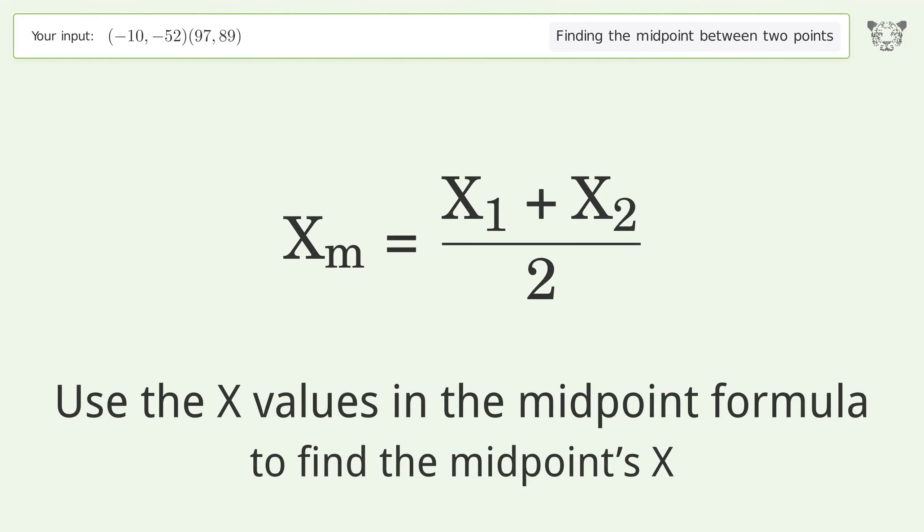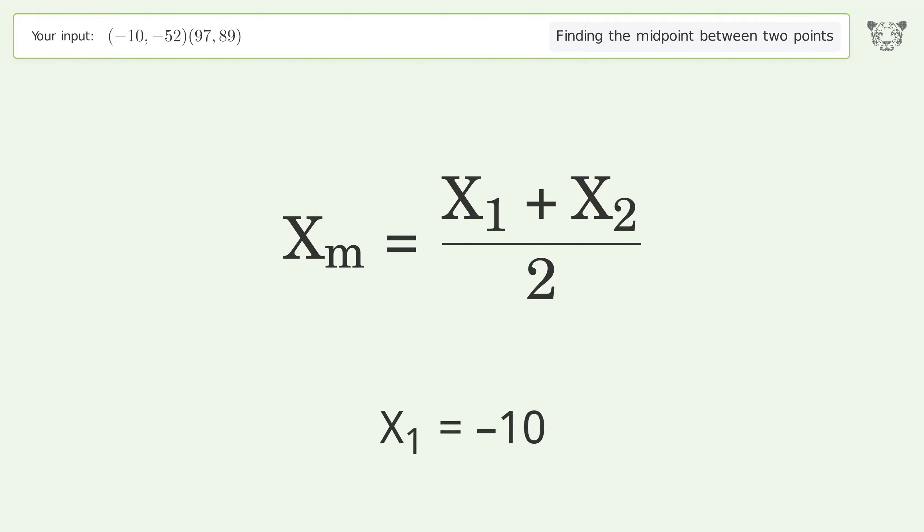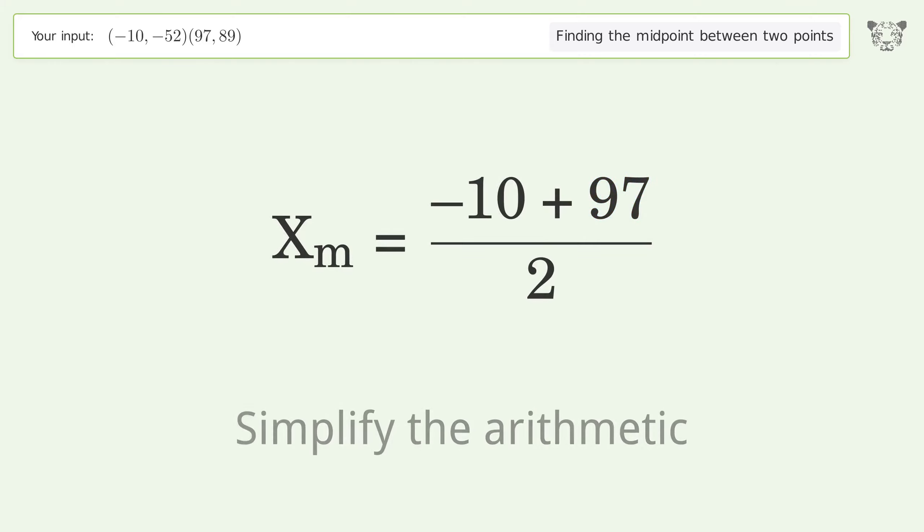Use the x values in the midpoint formula to find the midpoint's x-coordinate. x1 = -10, x2 = 97. Simplify the arithmetic.